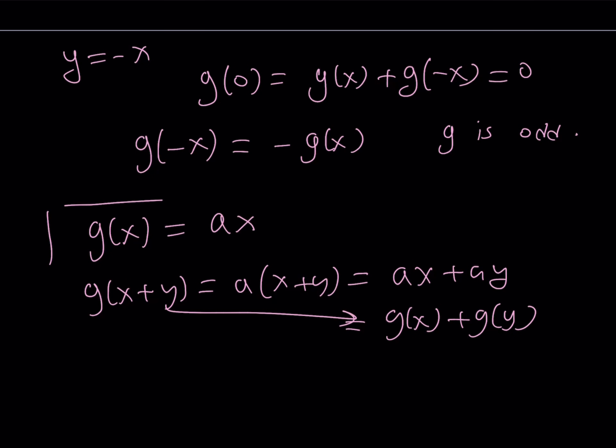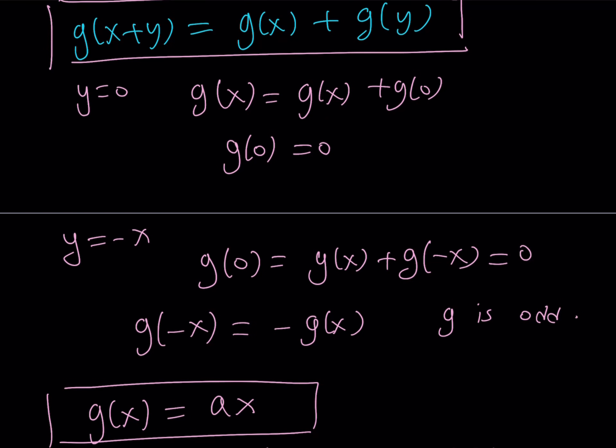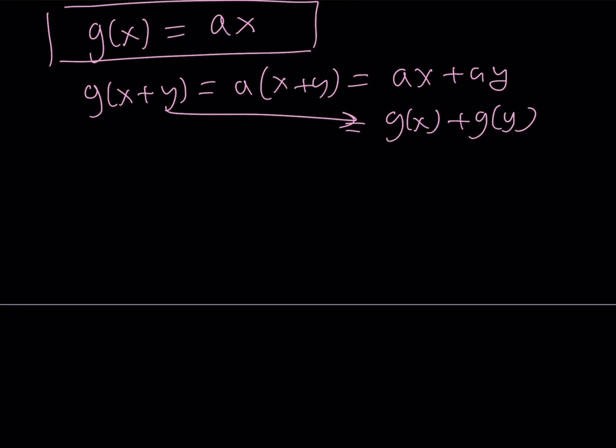And ay is equal to g of y. So our equation is actually satisfied by this equation. Of course, this doesn't mean that we proved this is the only solution, but I'm telling you that this is going to work. All right, great. Let's go back, because we're not looking for g of x, we're looking for f of x. Remember that? So what was our assumption?